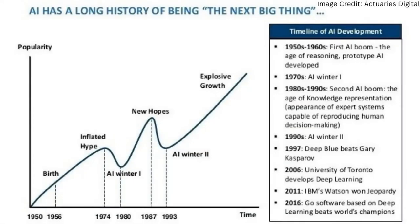The first AI winter, brought on by unfulfilled promises, began in the 1970s. This lack of financing had a negative influence on both deep learning and AI research.